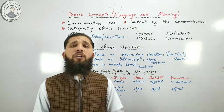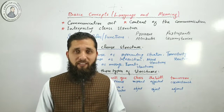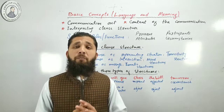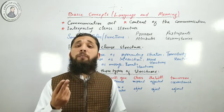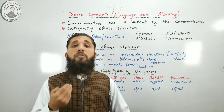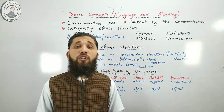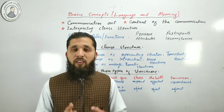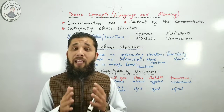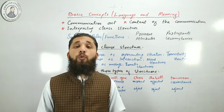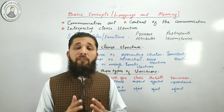A functional grammar aims to make form relate to function and meaning in context. Three strands of meaning form the basis of a functional interpretation of grammar: the representational, the interpersonal, and the textual. The representational interpretation is to express our interpretation of the world as we experience it. The interpersonal is to talk with others to bring about changes in the environment, and the textual is to organize what we say or write so that the message is coherent and relevant to the situation.